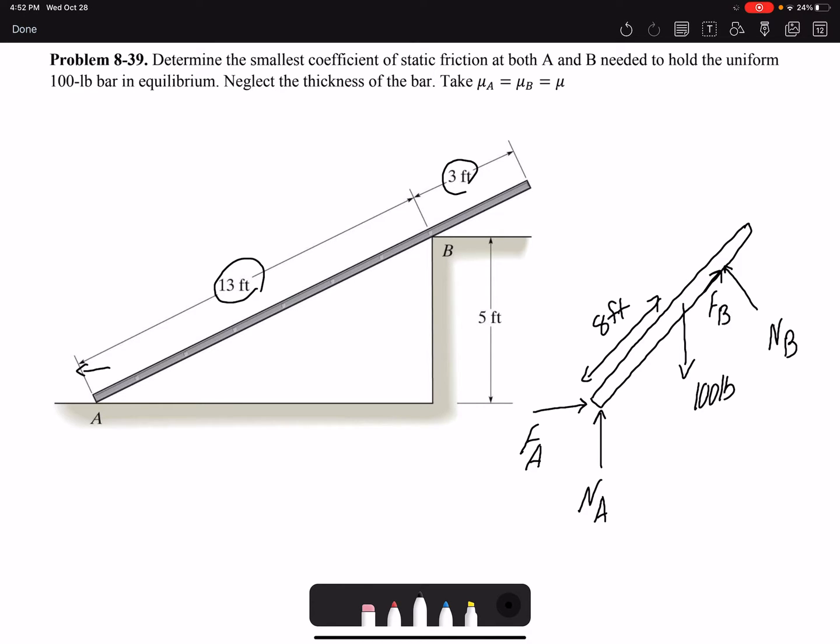I don't have the angle here, theta, but I have the dimensions. If I have 5 feet and then 13 feet, this distance would be 12. So I'm dealing with a 5-12-13 triangle.